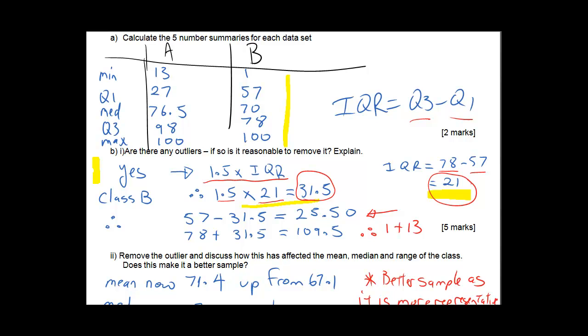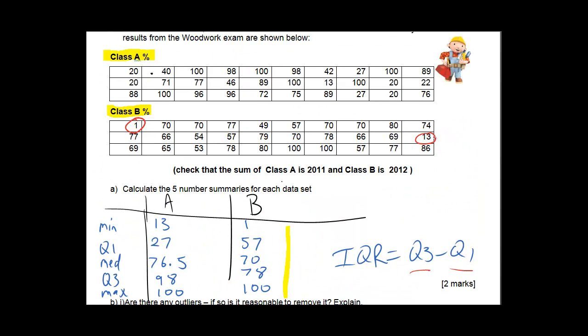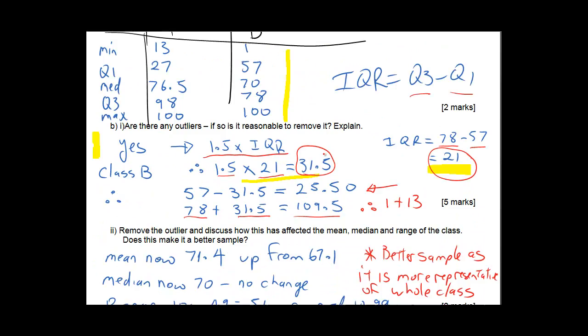So 1.5 times 21 gives me 31.5. So we are now saying that any piece of data that falls 31.5 away from the lower quartile or above the upper quartile is so far away from the data that it's probably not worth using. So let's look at the top end. Our top end is 78 is our upper quartile. So from here we add 31.5 and it gives us 109.5. So is there anything above 109.5? And we look at our data and say no there isn't because we can see that the highest number is 100.